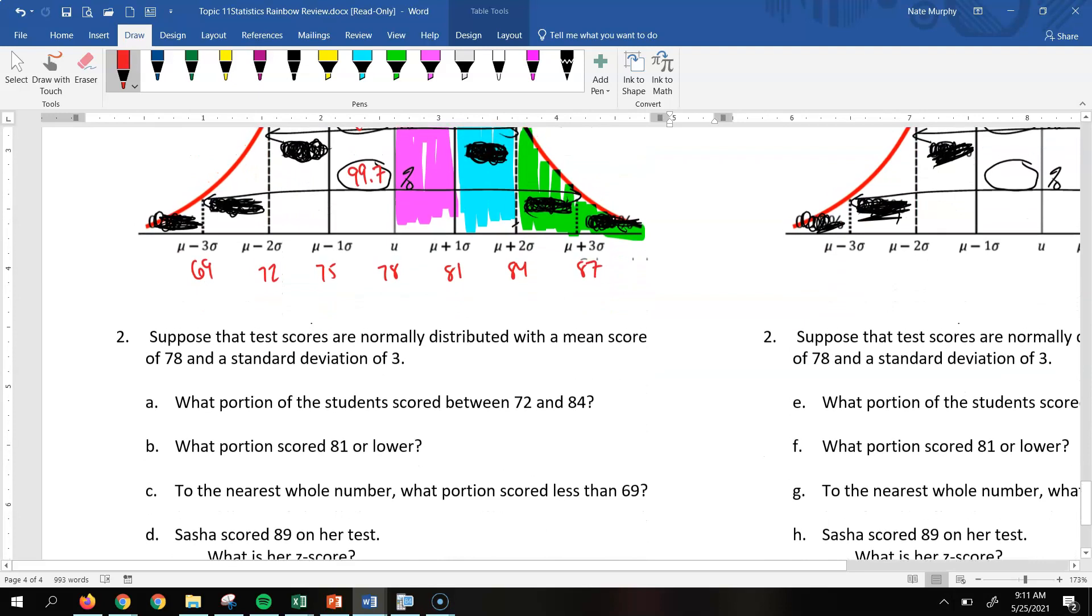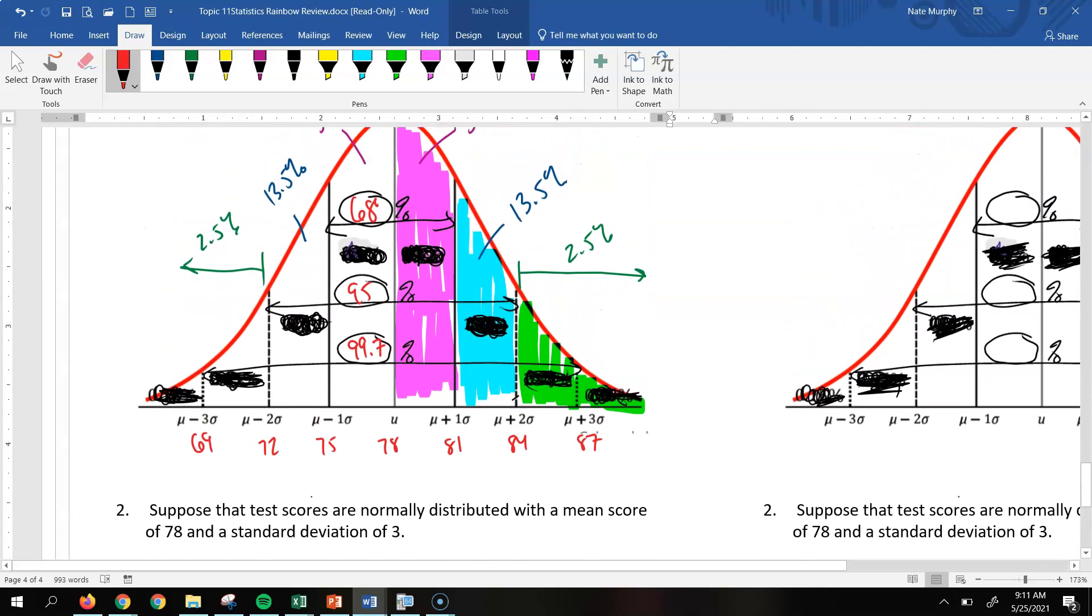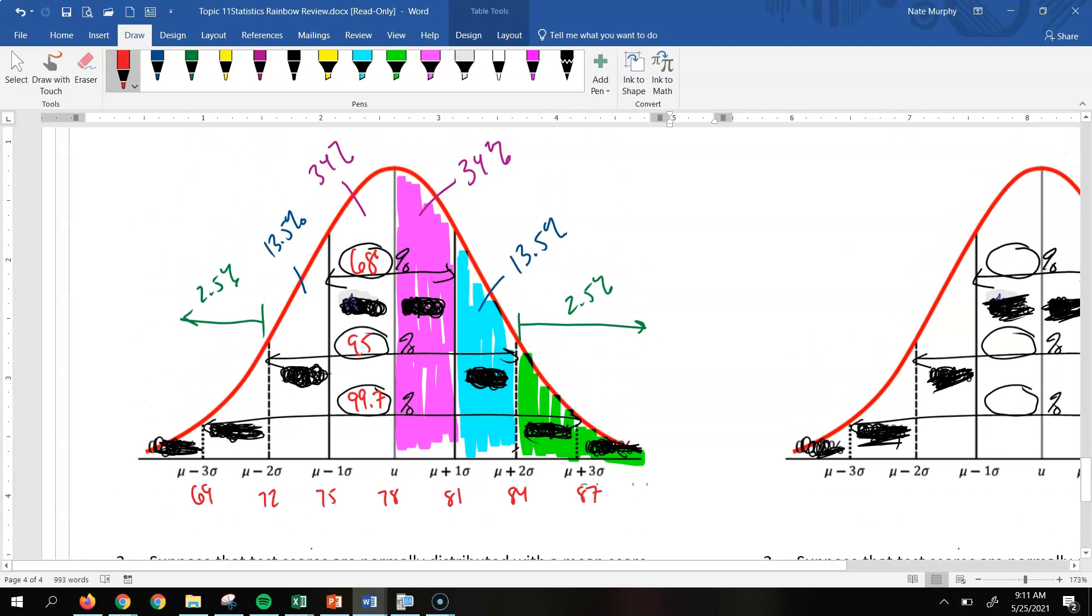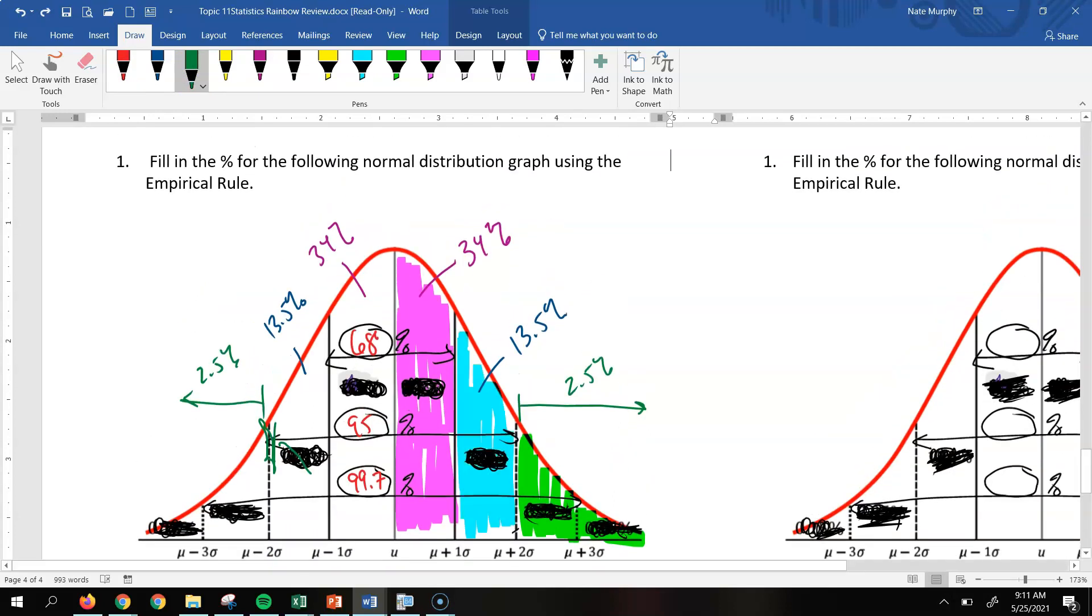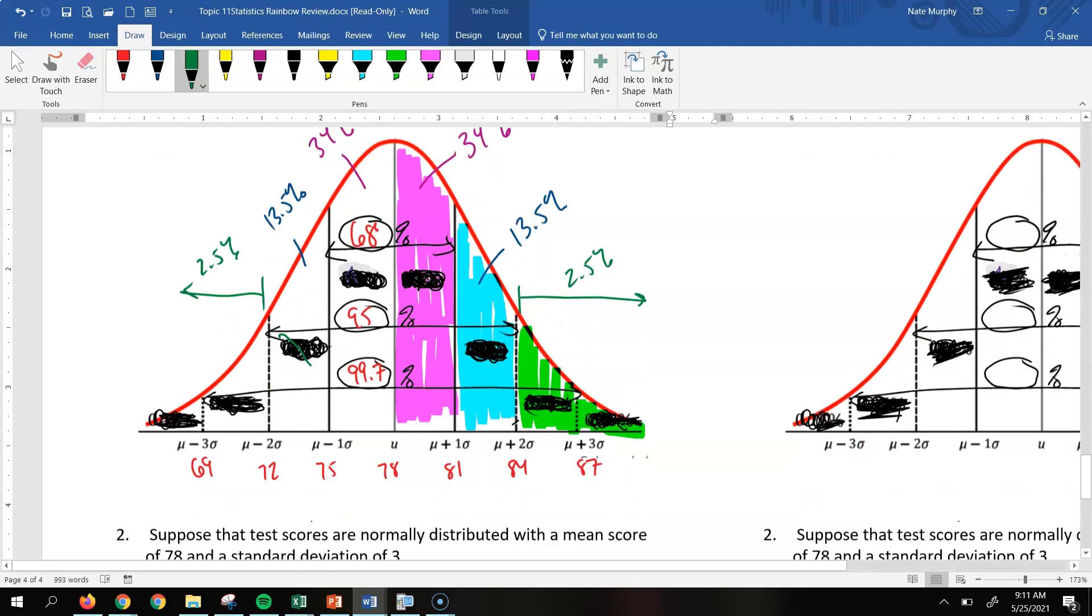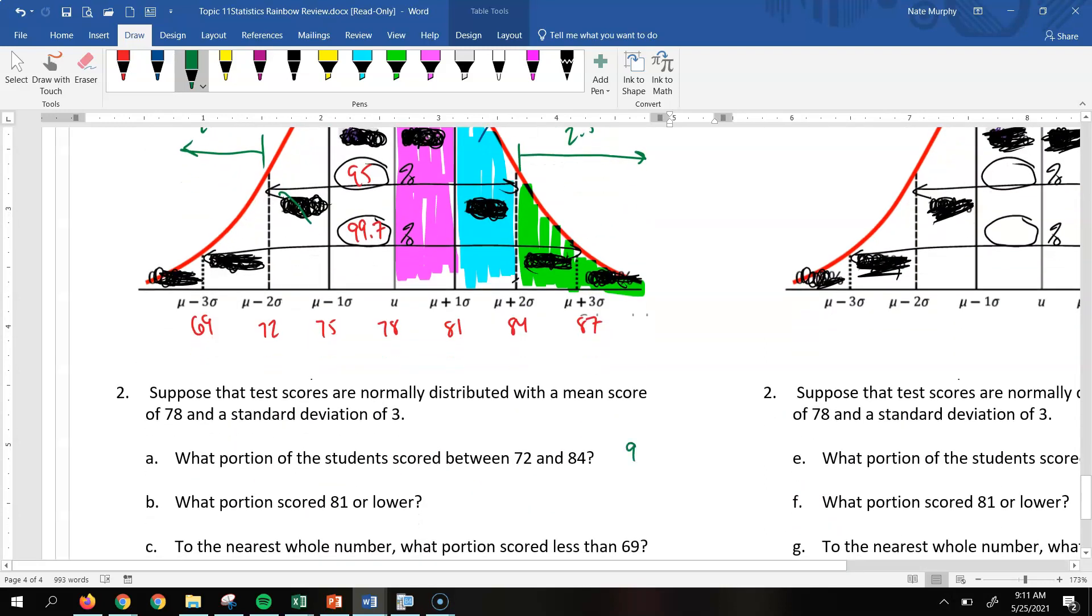And so for part A, it says, what portion of the students score between 72 and 84? So scoring between 72 and 84 would be right here. So if you notice, that's the 95% of data.